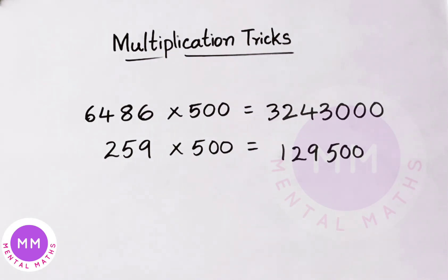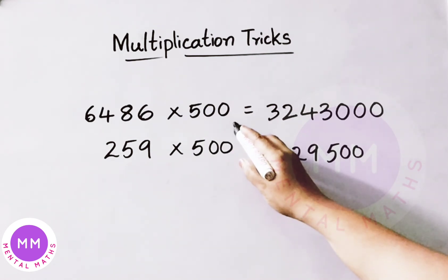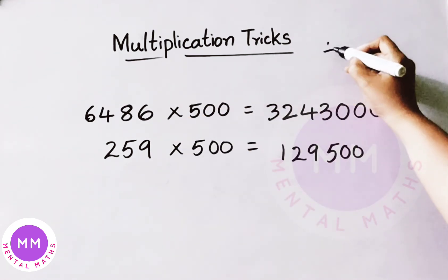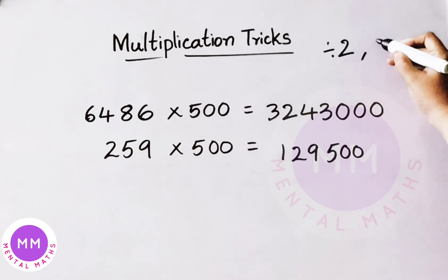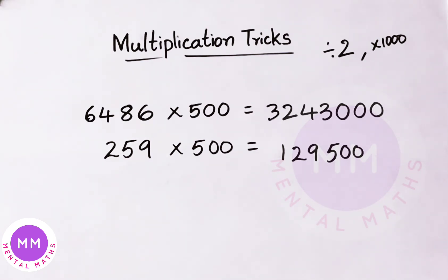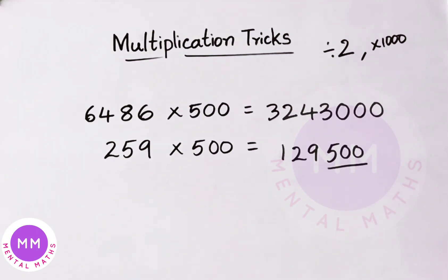So what we have done in these calculations: if a number is going to be multiplied by 500 and the number is even, first we have to divide the number by 2, then multiply it by 1000. If the given number is odd, take the previous value, divide it by 2, and then write 500 at last to get the result.